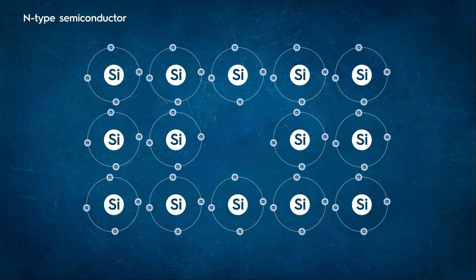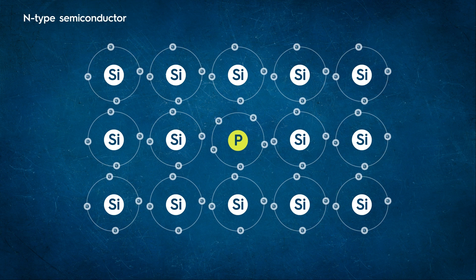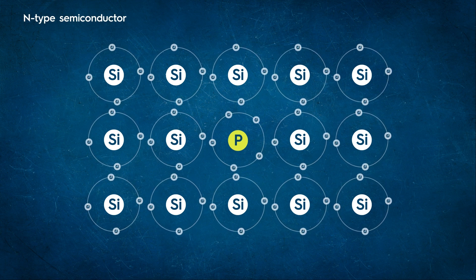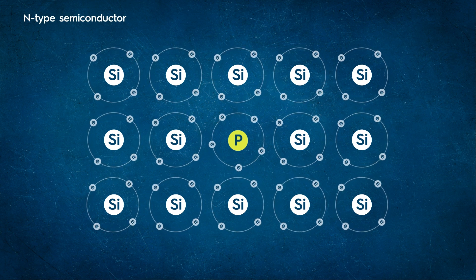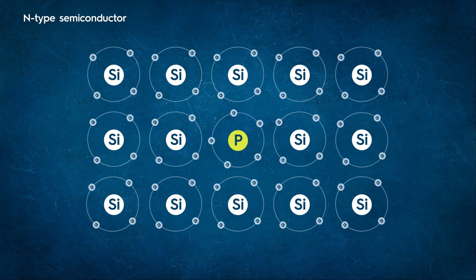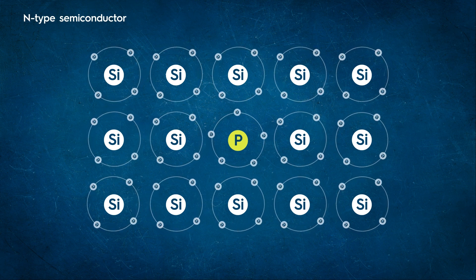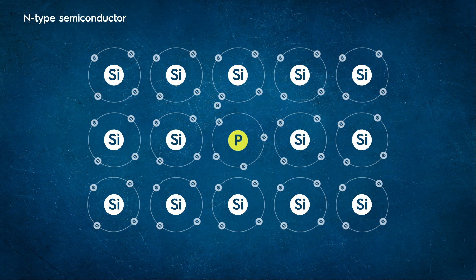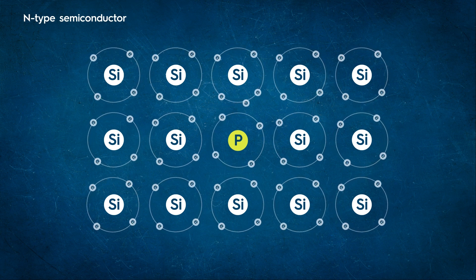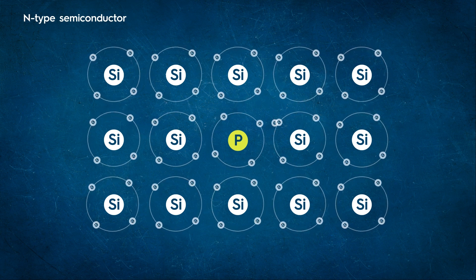When a pentavalent atom is added to silicon, four of its electrons form a covalent bond with the four silicon neighbors while the fifth electron remains weakly bound to the parent atom. As less energy is required to set this fifth electron free, they start moving freely in the lattice of semiconductor at room temperature.